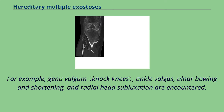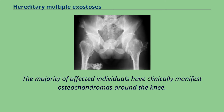For example, genu valgum, ankle valgus, ulnar bowing and shortening, and radial head subluxation are encountered. The majority of affected individuals have clinically manifest osteochondromas around the knee.